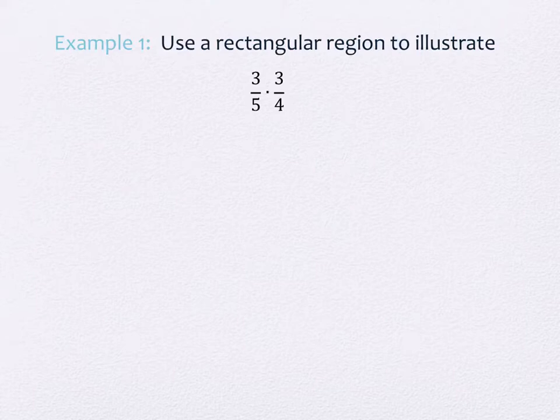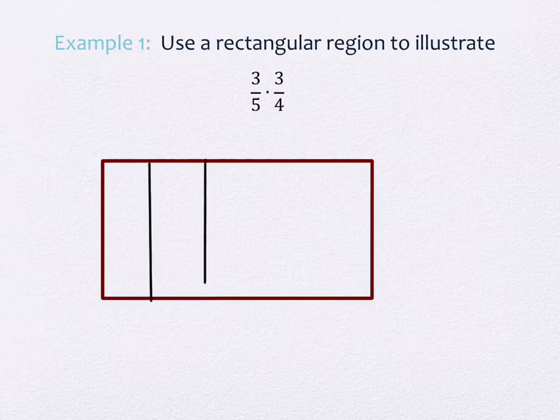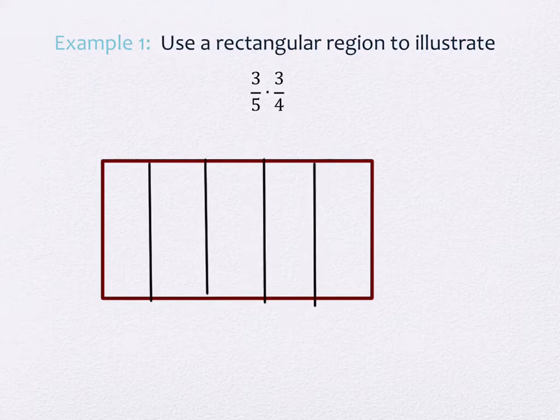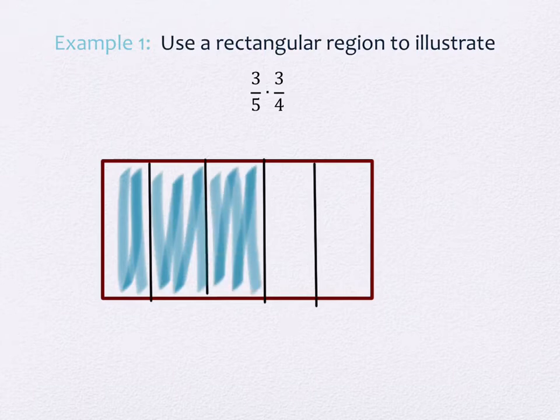Draw a rectangle. We're going to do 3 over 5 first. Split the length of the rectangle into 5 approximately equal pieces. Those are 5 individual strips. The fraction 3 over 5 means I have 1, 2, 3 of them shaded. That's 3 over 5.